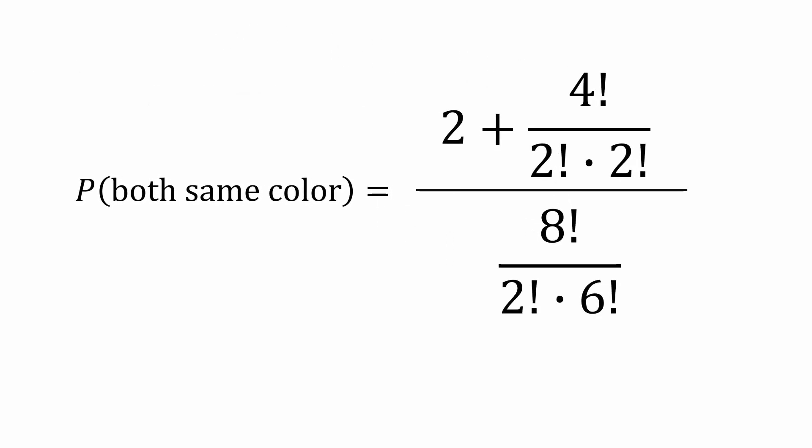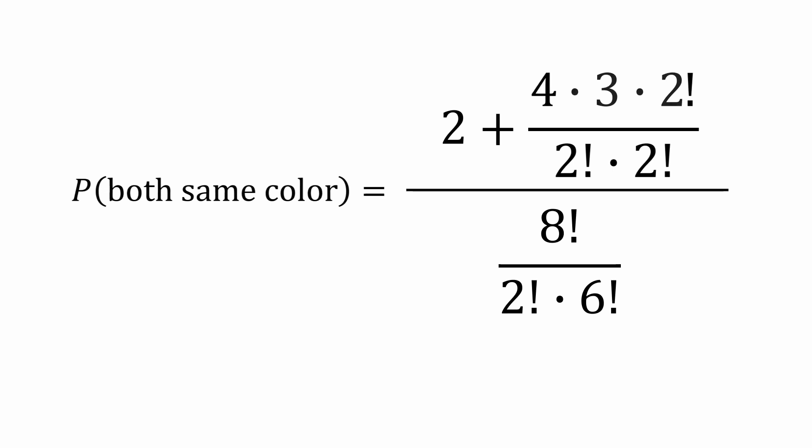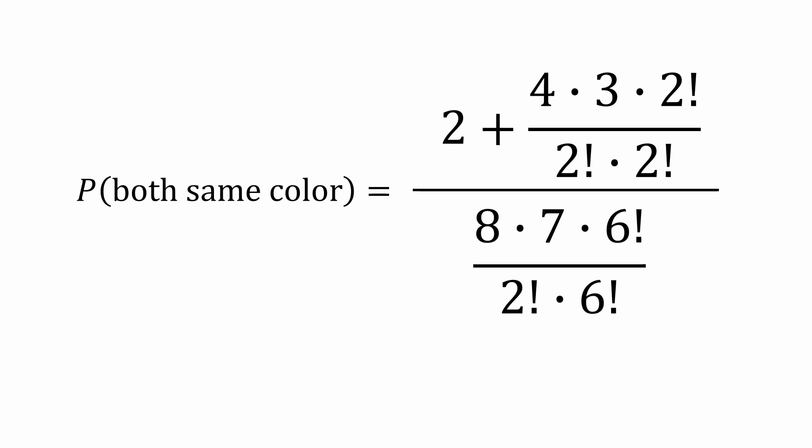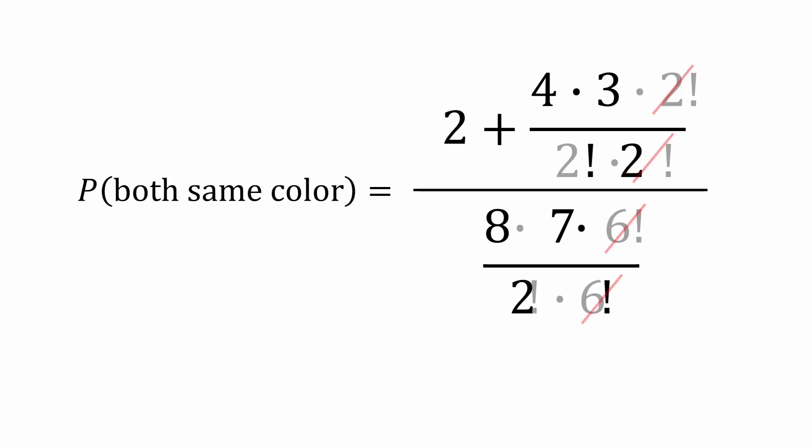I'll rewrite 4 factorial as 4 times 3 times 2 factorial, and 8 factorial I'll rewrite as 8 times 7 times 6 factorial. We can cancel out the 2 factorials and the 6 factorials, which simplifies to this.